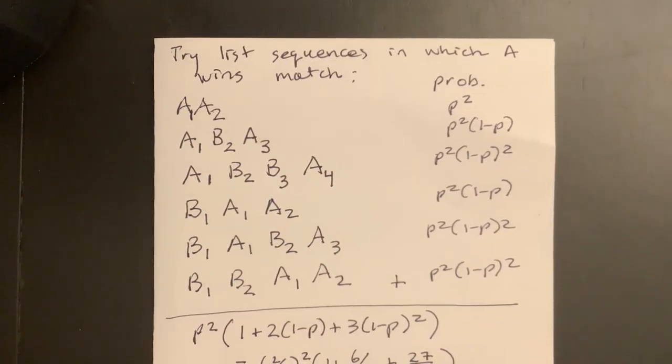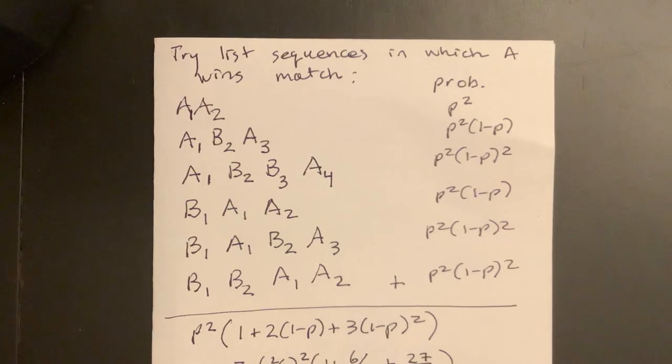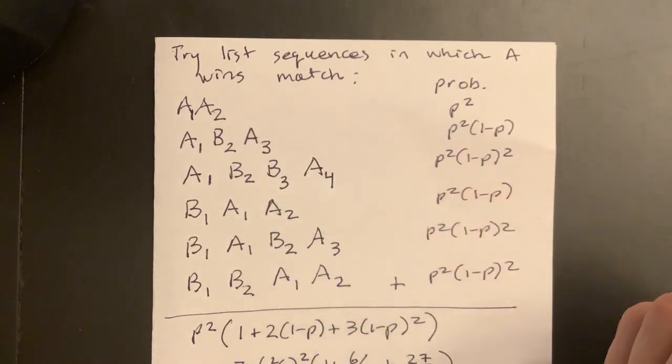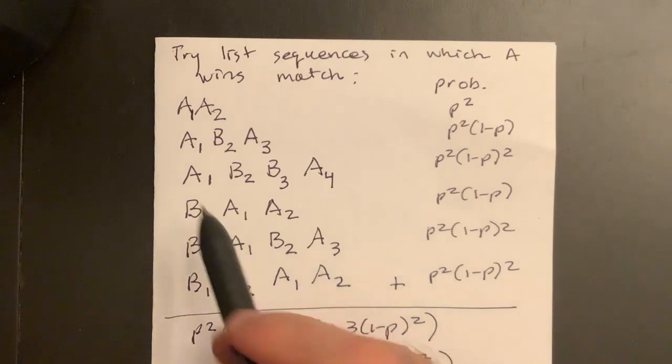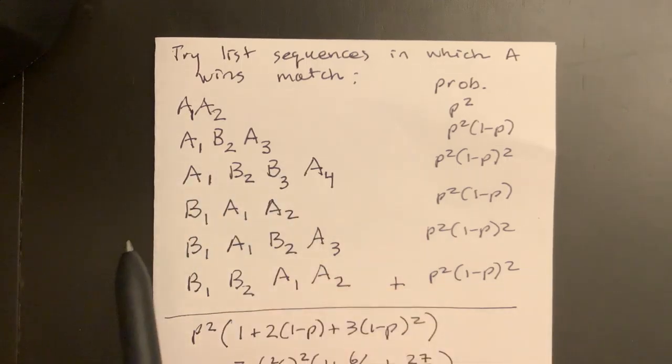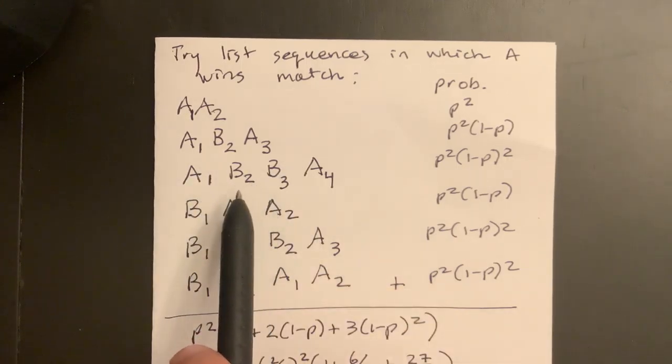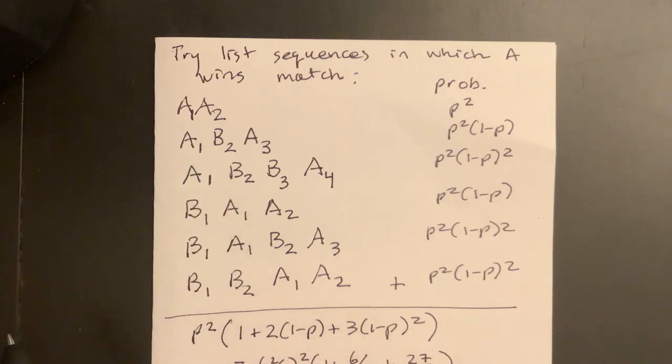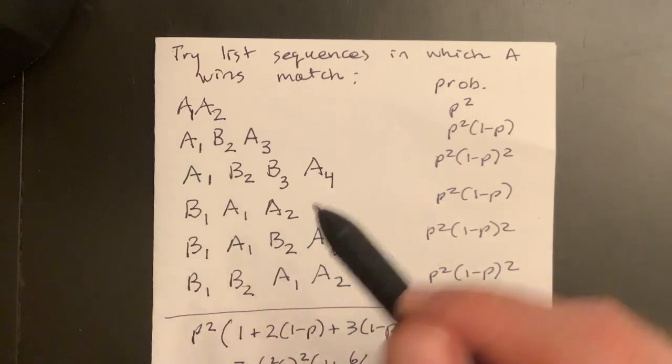All right, well if you're still with me on this, these are the actual ways the series could go if it's terminated when A wins the match. You see, there are sequences of size four, there are six that would have two A's and two B's.